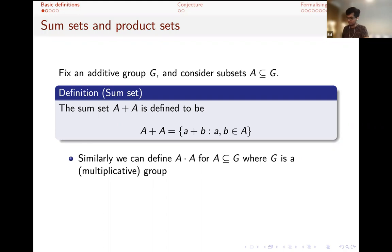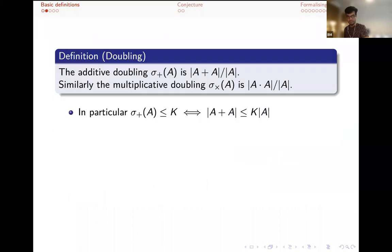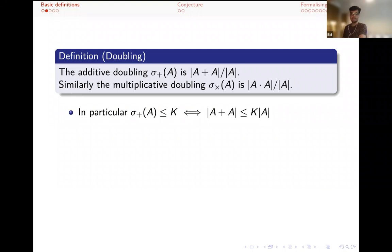You can do the same thing for multiplicative groups. We usually take A finite. It's worth noting that G only needs to be a semigroup for this to make sense. That's nice to note from a formalization point of view, but also I'll be doing this later when G is the real numbers, where the real numbers form a multiplicative group unless we insist we don't have zero, which will come into play later. One natural thing you can ask is how much bigger is the sum set relative to the original set, which gives rise to the notion of doubling.